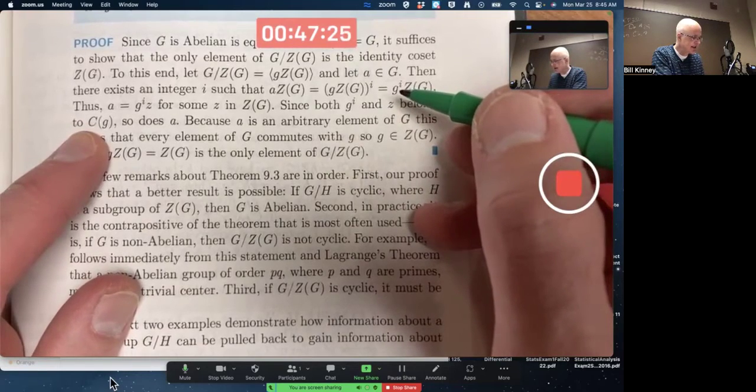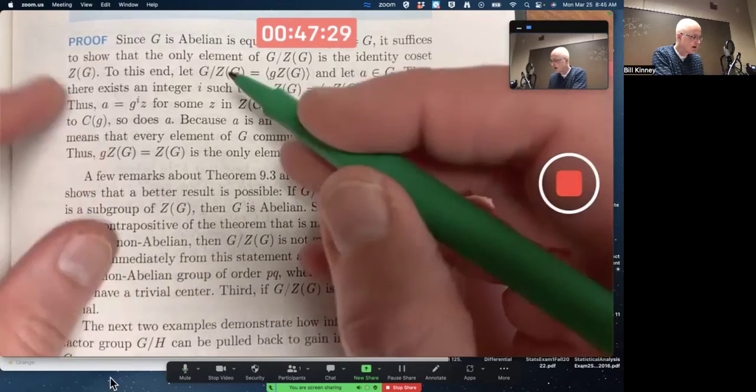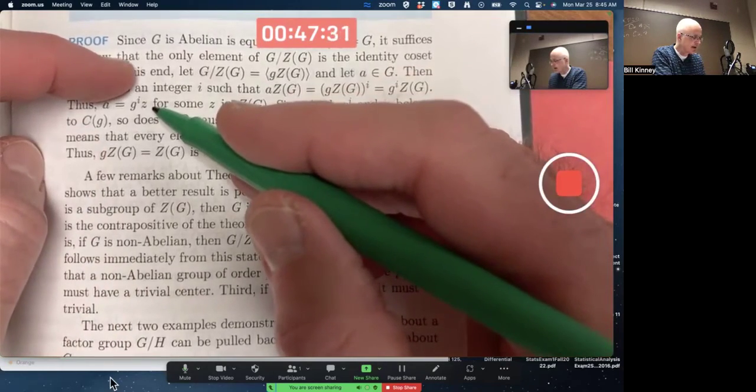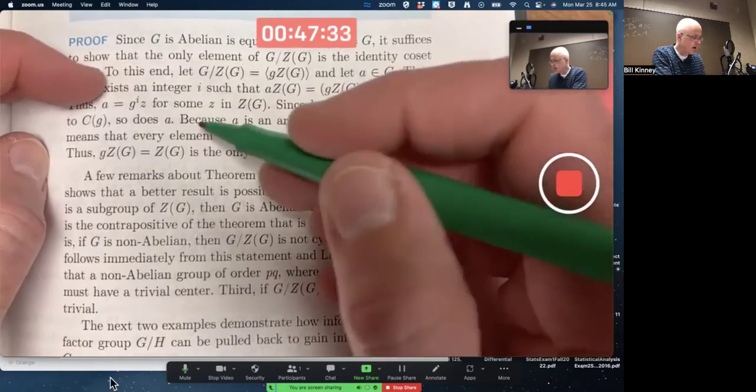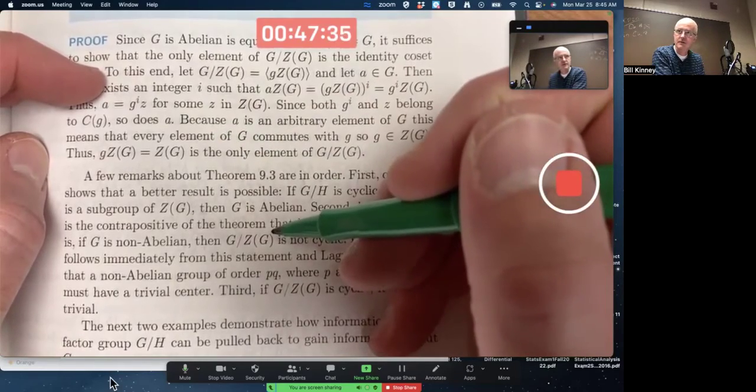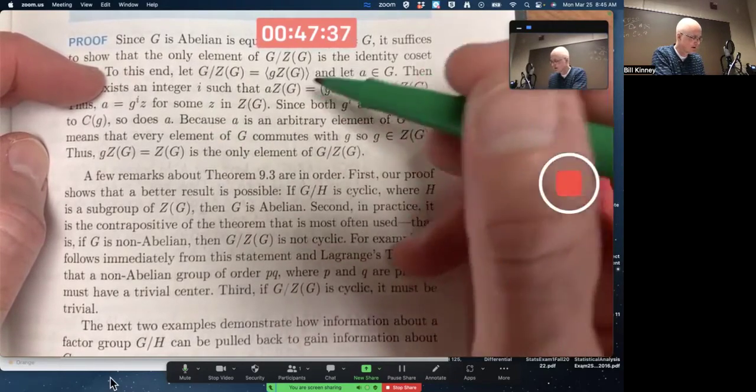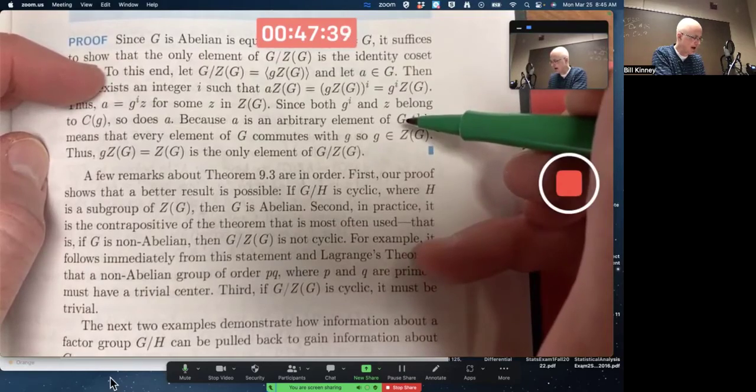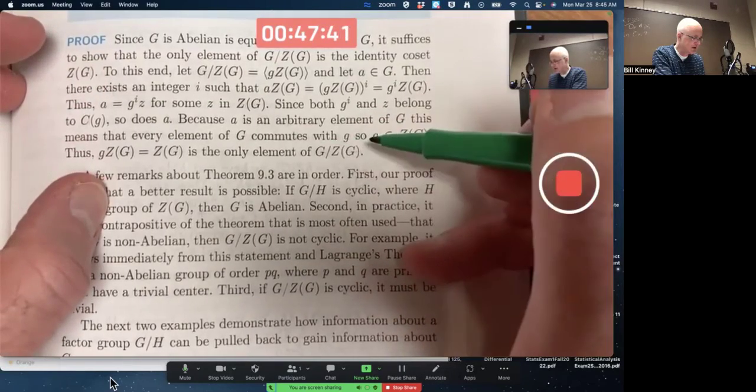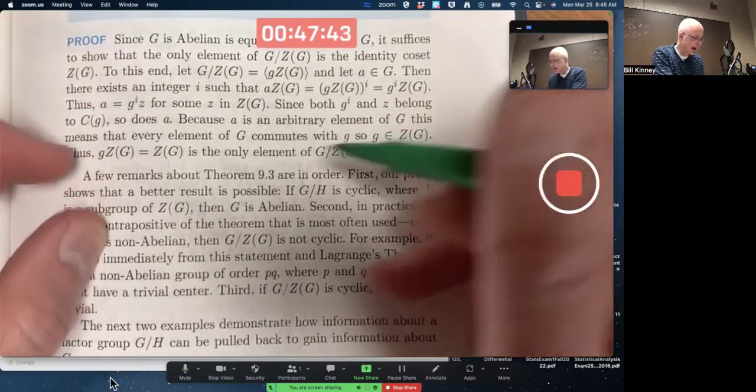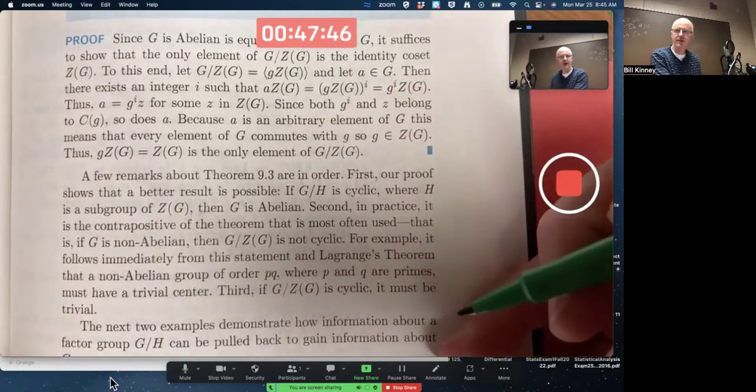The centralizer of g is a subgroup of capital G. So if you've got the product of two things in that centralizer, the result will also be in the centralizer. A is an arbitrary element of G and it commutes with little g. So little g must be in the center. And that means this is trivial. It's got to be the only element of that.